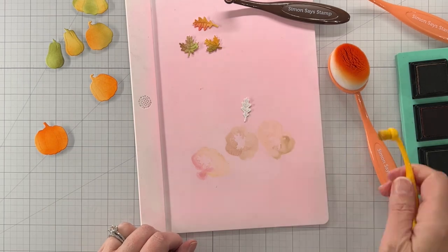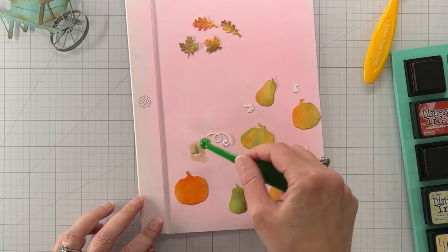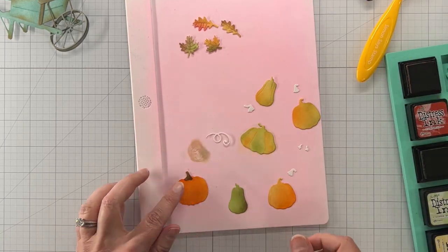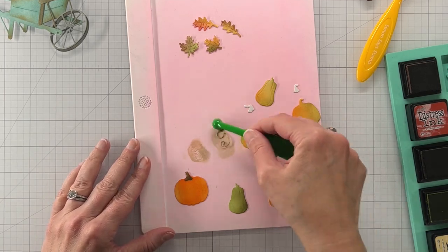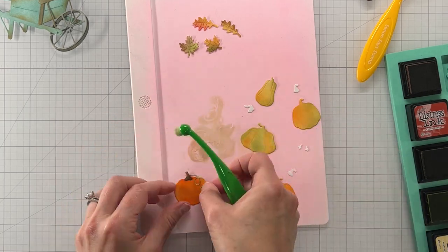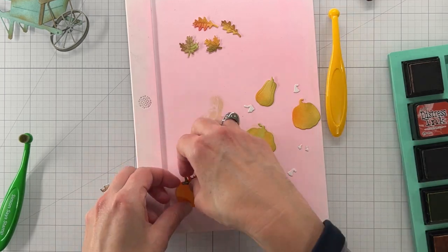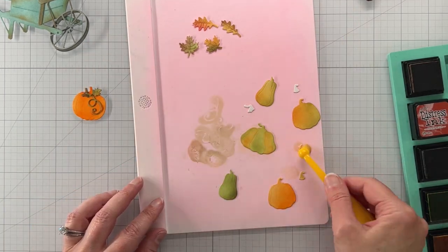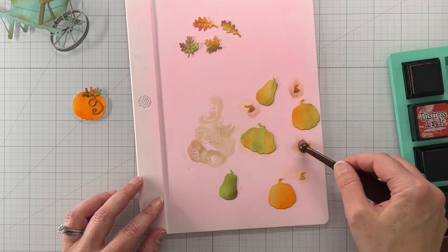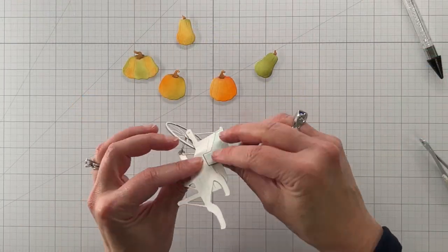All right here are the little toppers, the stems or whatever you want to call them for all the squash and the pumpkins. There are all these little pieces in the die set but it's very obvious which stem goes to which vegetable.